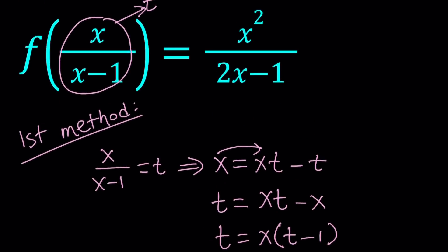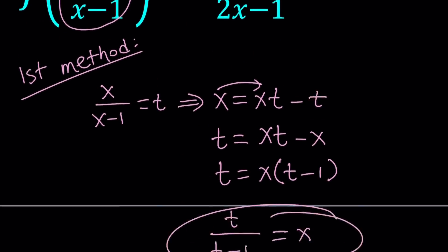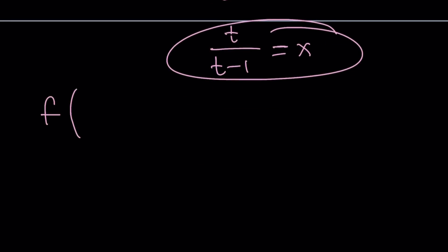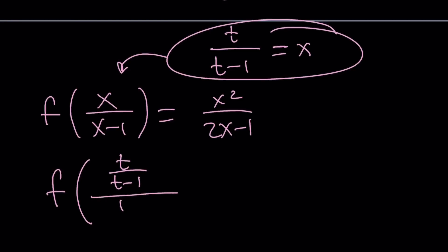When you substitute on the left-hand side. So, we have the original problem is f of x over x minus 1 equals x squared over 2x minus 1. When you replace x with that on the left, you should be getting f of t over t minus 1 divided by t over t minus 1 minus 1.